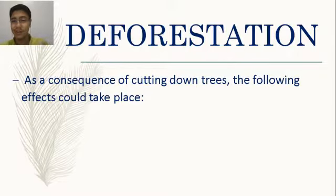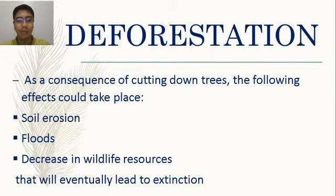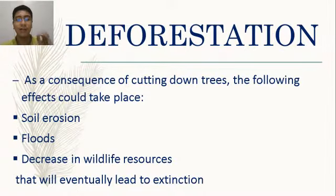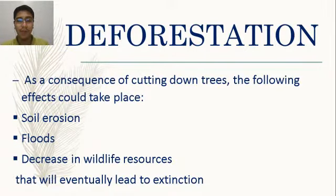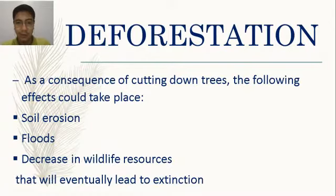When deforestation occurs — when trees are cut down — the effects include soil erosion, floods, and a decrease in wildlife resources that will eventually lead to extinction. Without trees, there is nothing to hold water, so flooding happens. Without trees holding the soil, erosion occurs and the soil is easily washed away.